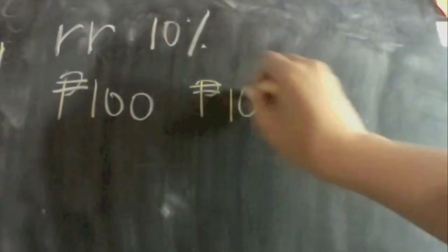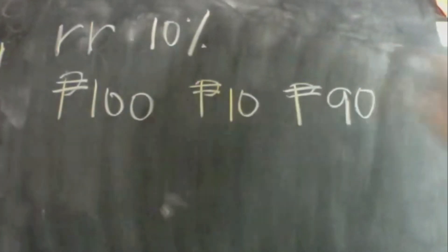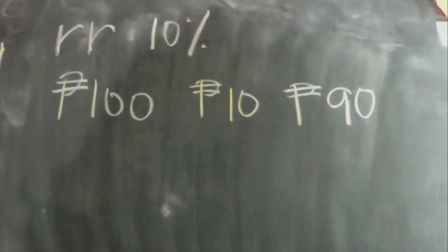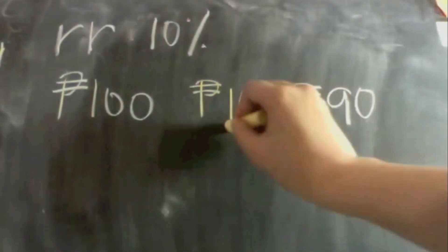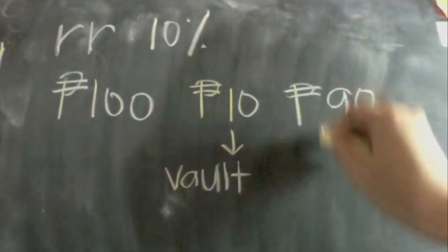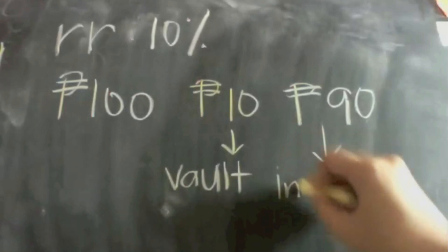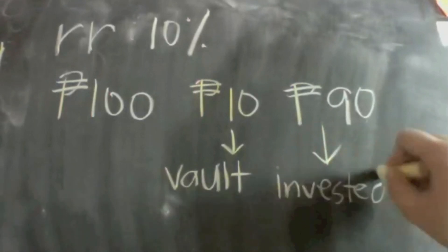For example, in a bank, a depositor deposited 100 pesos. The 10% of the 100 pesos is your Reserve Requirement, which is 10 pesos, while the remaining 90% is 90 pesos. The 10 pesos should be the amount kept and reserved, while the remaining 90 pesos is the amount that can be invested out.